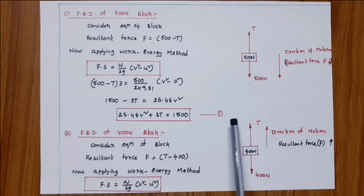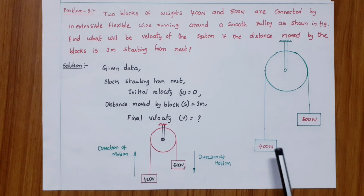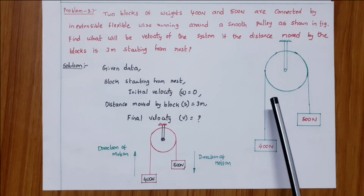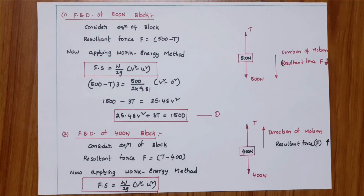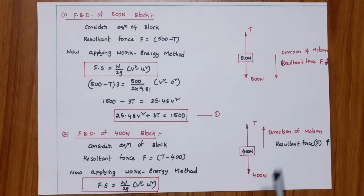FBD of 400 newton block: the direction of motion of the 400 newton block is upwards. Weight acts downwards and tension T acts upwards, away from the block. Force in direction of motion is T (positive); 400 newton is opposite to the direction of motion (negative). Resultant force F equals T minus 400.